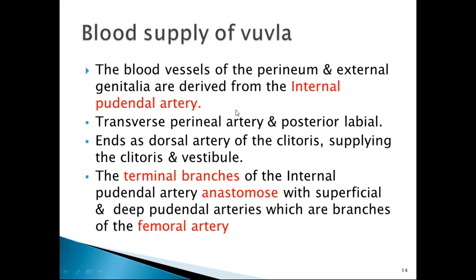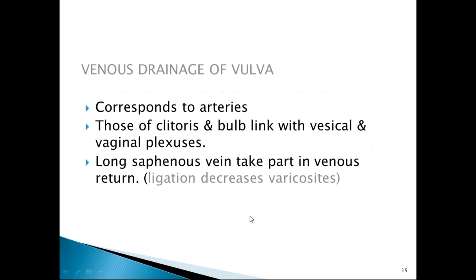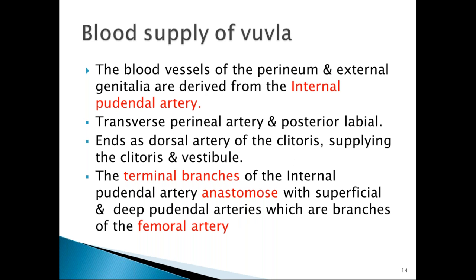The blood supply of the vulva is derived mainly from the internal pudendal artery through its branches: transverse perineal, posterior labial, and finally the dorsal artery of clitoris, which supplies the clitoris and vestibule. Branches of the internal pudendal artery anastomose with superficial and deep pudendal arteries, which are branches of the femoral artery.